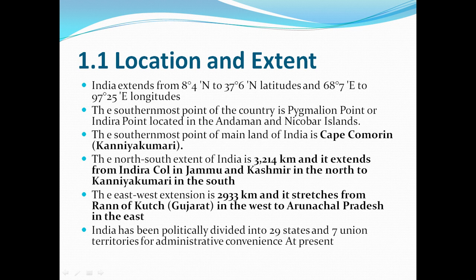The east-west extension is 2,933 km. It stretches from Rann of Kutch, Gujarat in the west to Arunachal Pradesh in the east. That means measuring parallel from west to east, the distance is 2,933 km.